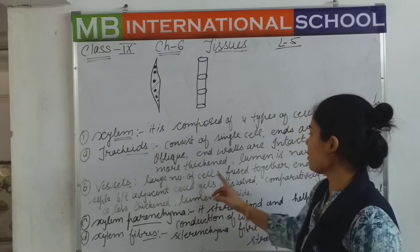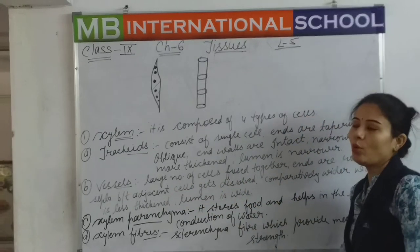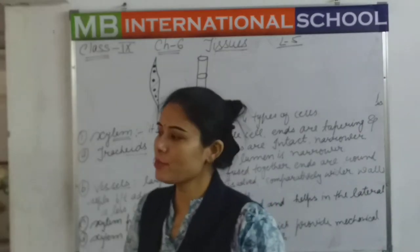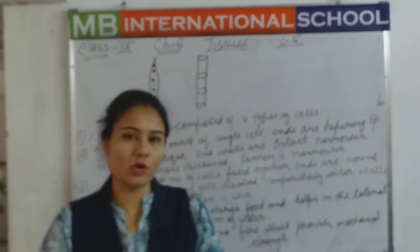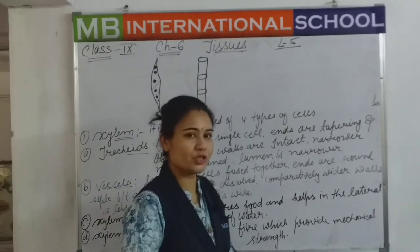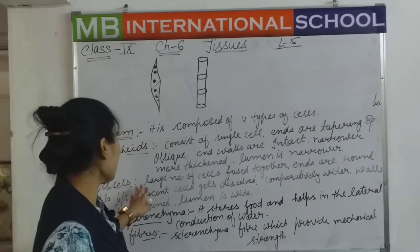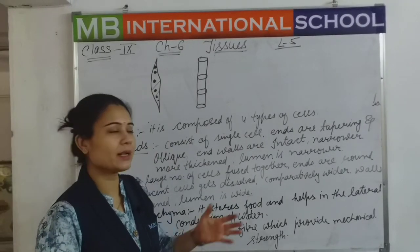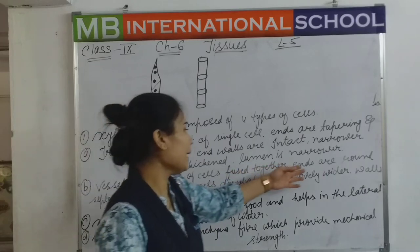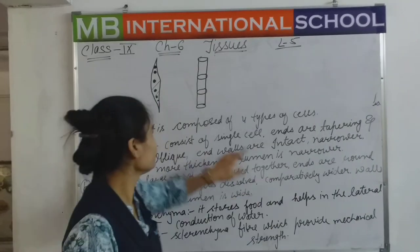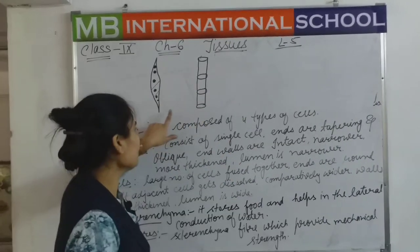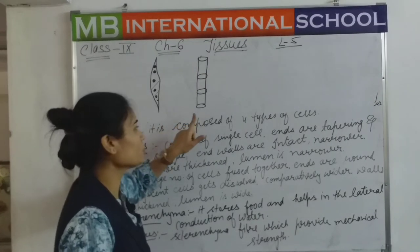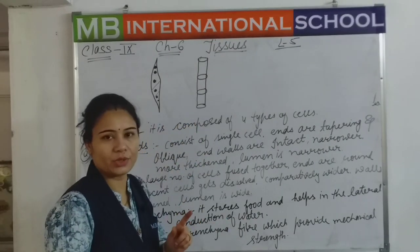In vessels, a large number of cells fuse together. Many cells join together and work as one. The ends of vessels are rounded — unlike tracheids which are tapering, the ends here are rounded.